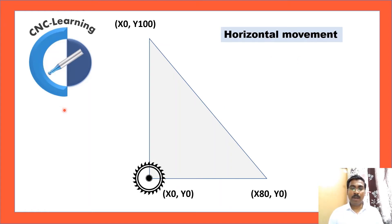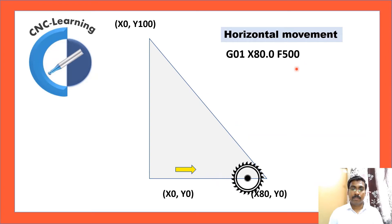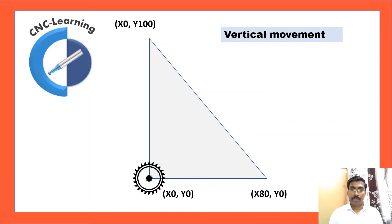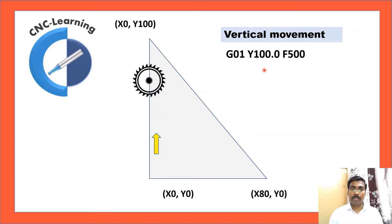Now we will see how programs are made for horizontal and vertical movement. For horizontal movement, the tool moves only in the X axis — no Y movement. The code is G01, X80, with a feed rate, and the tool moves in that direction. For vertical movement, the code is G01, Y100, F500 — defining only the Y axis means movement is vertical.